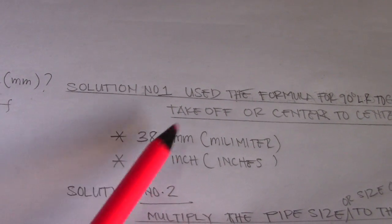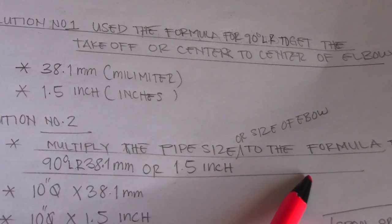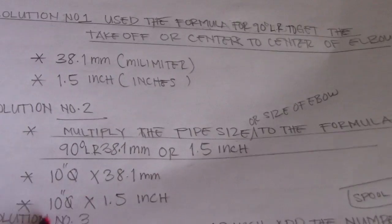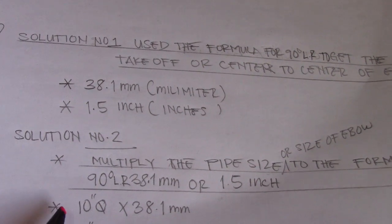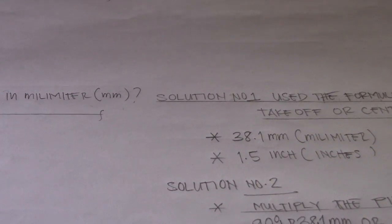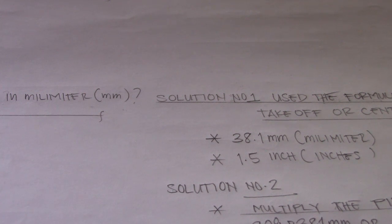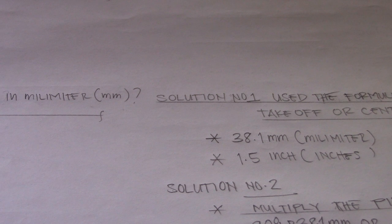So this is 38.1 millimeter, 1.5 inches. We have solution number two: multiply the pipe size for the formula 38.1. The diameter multiplies 38.1 for millimeter, the 10 inch multiplied to 1.5 for inches. So the same formula for the 45 degrees elbow. The same procedure for the 45 degrees elbow. The 45 degrees elbow is 0.625 or 15.8 for the millimeter. So that's all for now guys and I hope you are clear about this topic for finding the spool cut length. Have a nice day guys, bye bye, see you next time.